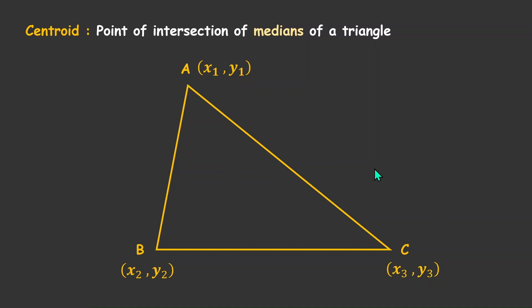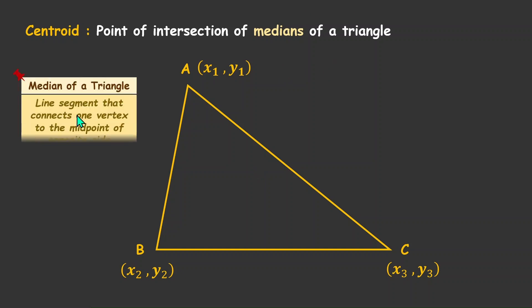Now let's construct the medians of the triangle to see where a centroid might lie. Medians of a triangle are simply the line segments that connect one vertex to the midpoint of the opposite side.